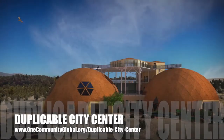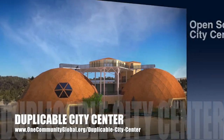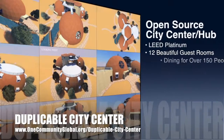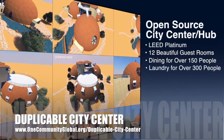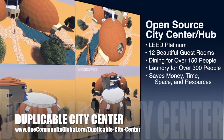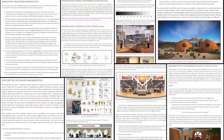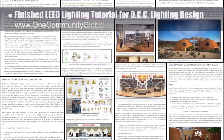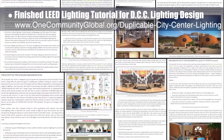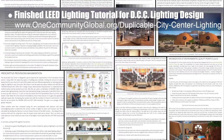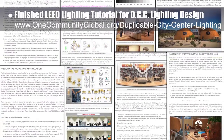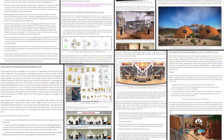One Community is also creating an open source duplicable city center designed to be LEED Platinum certified, providing 12 guest rooms, dining for over 150 people, and laundry and recreation space for over 300 people, all while saving money, time, space, and resources. This week the core team finished the final 10% of the LEED lighting tutorial details for the lighting design of the city center and all other One Community structures. We added additional formatting, images, and finished the case study section explaining how we're applying all the LEED suggestions in the city center.